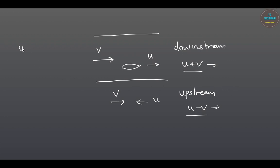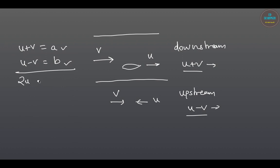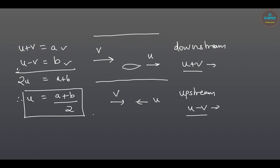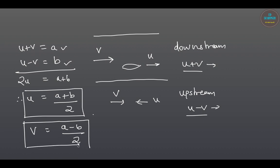Let's say we know the downstream velocity — let's call U plus V as A — and the upstream velocity U minus V as B. If we know these two values A and B, we can find out U and V using simultaneous equations. Adding the two equations gives 2U equals A plus B, therefore U equals (A plus B) divided by 2. Subtracting gives V equals (A minus B) divided by 2. So U is the speed of the boat and V is the velocity of the stream.